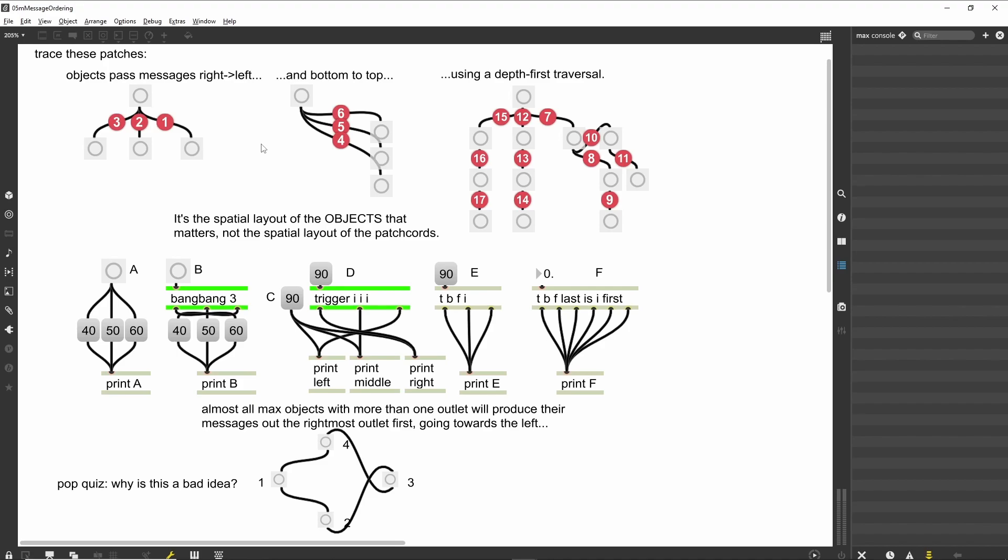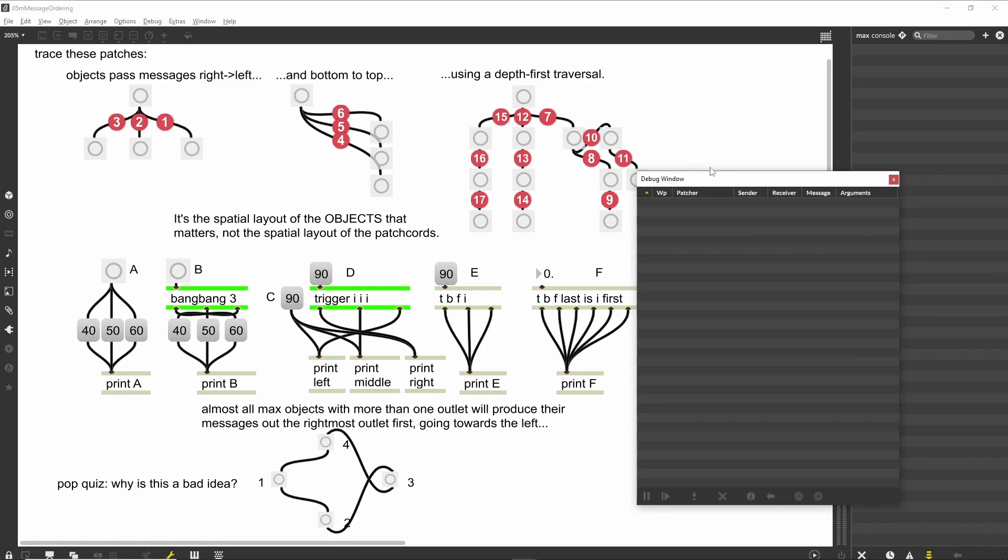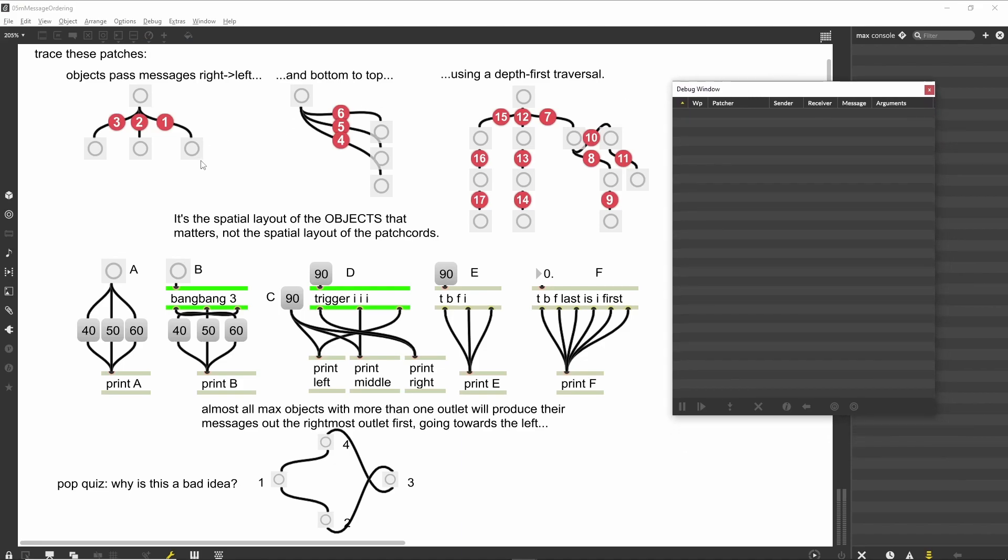Now the top row of patches in the tutorial will have small red circles with numbers in them covering the patch cords. These are called break watchpoints or just breakpoints. When we activate our patcher, operation will stop at each breakpoint. We can examine the state of things, then continue operation to the next breakpoint.